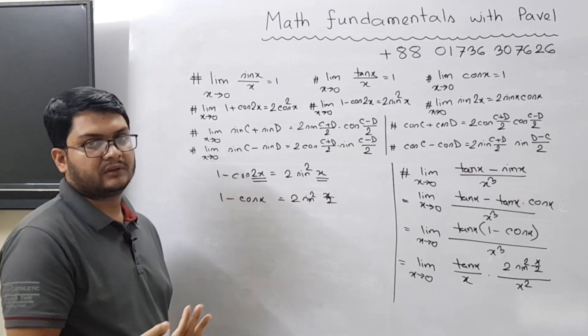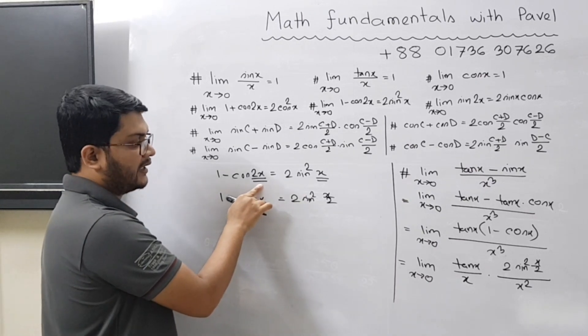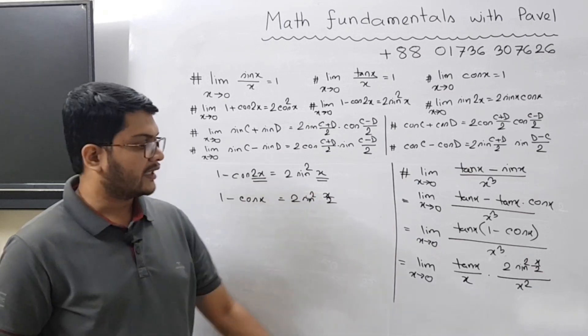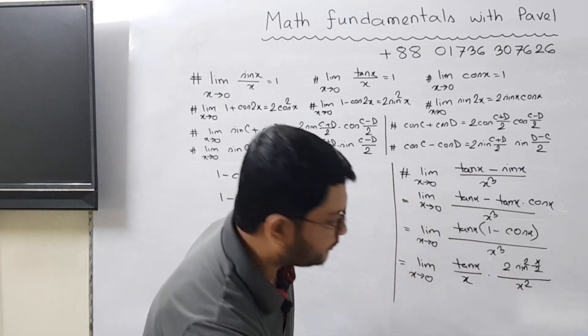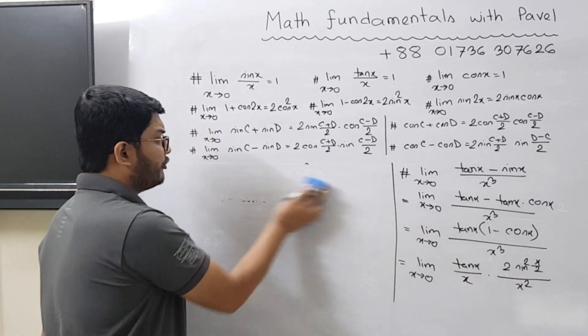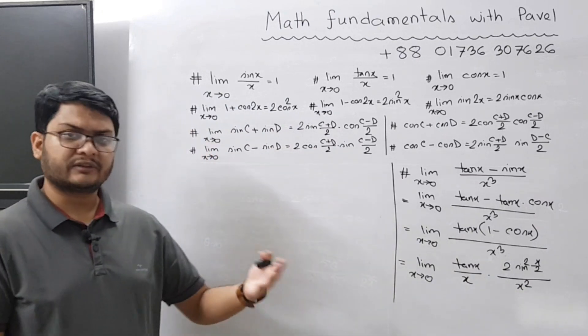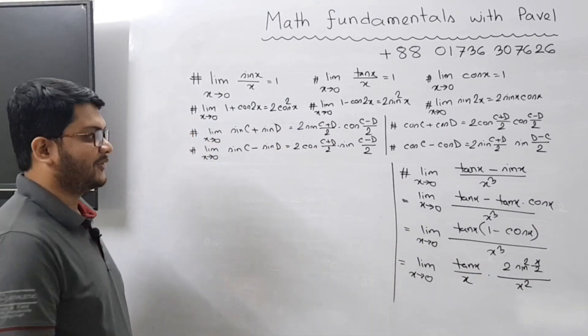If you have 2x here, you get x. If you have x here, you get x divided by 2. That's how we have written 2 sin² (x/2) divided by x². Now if you have watched the previous three lectures, the next concepts will be pretty much familiar to you.